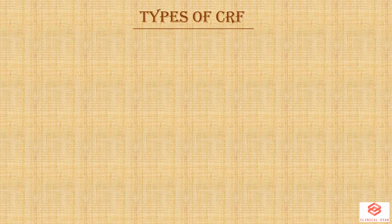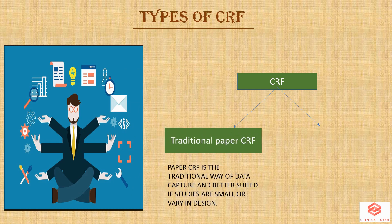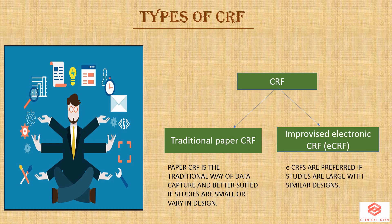Designing a CRF is a crucial process in clinical trial and requires enormous planning and attention, as this will help in assessing the safety and efficacy of the medicinal product accurately. Broadly, there are two types of CRFs used in clinical research: traditional paper CRF and electronic CRF. Paper CRF is the traditional way of data capture and is better suited if studies are small or vary in design, whereas eCRFs are considered if studies are large with similar designs.